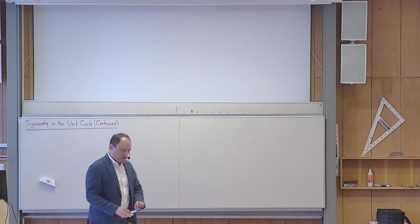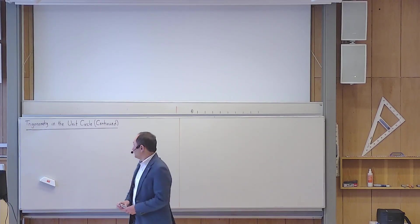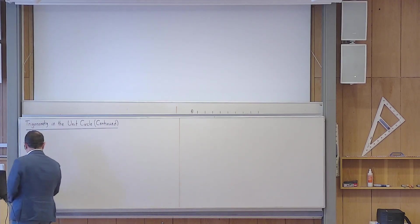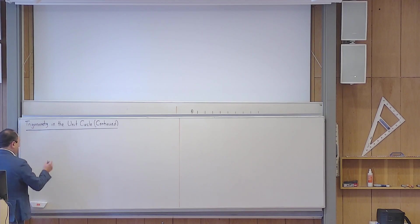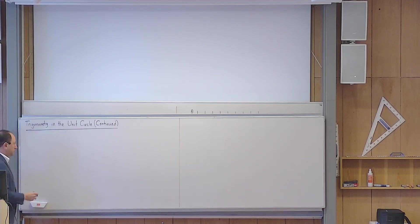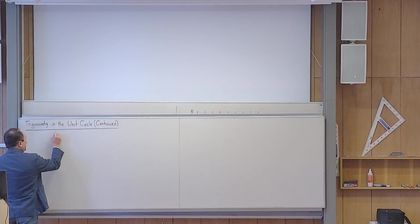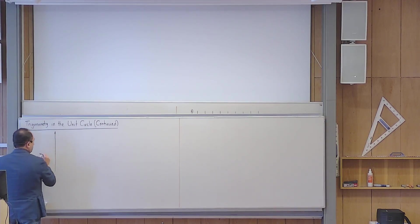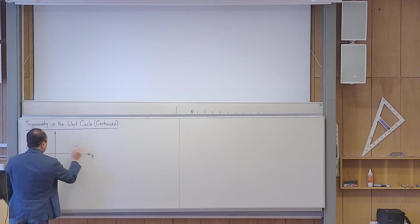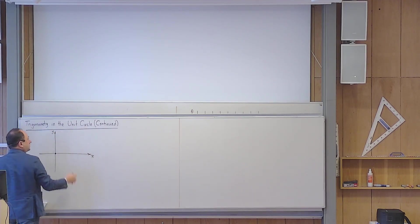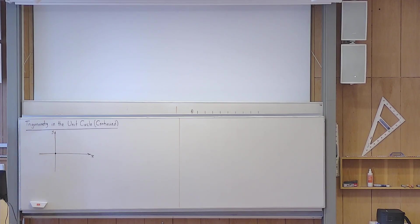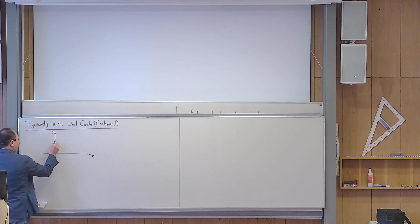Good morning. Let us continue the lesson. Let me just recap a little bit about what we learned before. Do you remember what was the notion of the unit circle? You have a coordinate system, x and y. You take the origin as the center of this circle and the radius of the circle should be one length unit. So you draw it here.